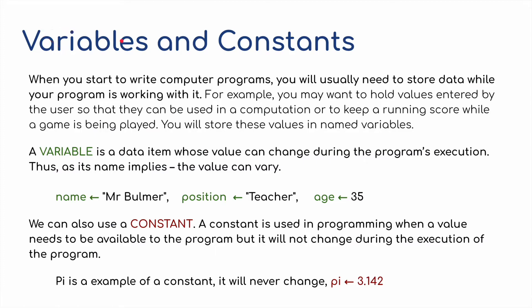But we'll start with variables and constants. When we start to write computer programs, we usually need to store data while the program is working with it. For example, you may want to hold values entered by the user so that they could be used in a computation, or to keep a running score while a game is being played. You will store these values in named variables. A variable is a data item whose value can change during the program's execution. Thus, as its name implies, variable, the value can vary.